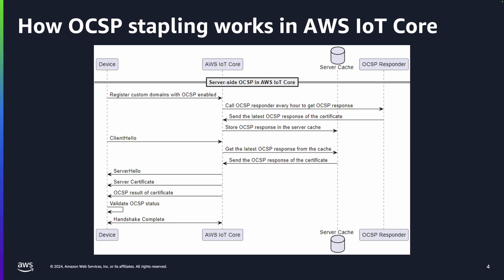Let's look at the step-by-step workflow. First, the device needs to be registered with custom domains with OCSP stapling enabled. Two, AWS IoT Core calls the OCSP responder every hour to get the certificate status. Three, the OCSP responder receives the request, sends the latest OCSP response, and the server stores the cached OCSP response.